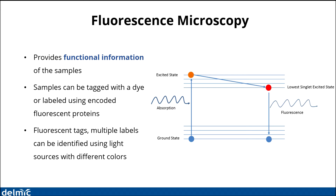By tagging different parts of a cell with different fluorescent molecules, or by making different parts of a cell express different fluorescent proteins, and by imaging such a sample in an optical microscope, you can image different colors and different parts of the cell. This provides functional information about the sample, because that is what you are labeling.